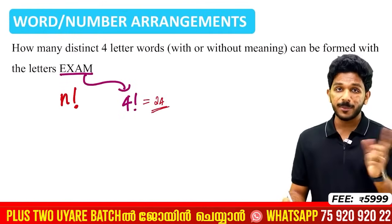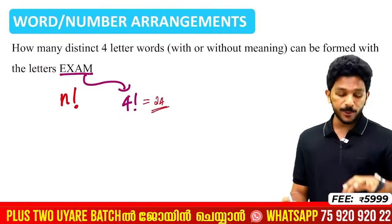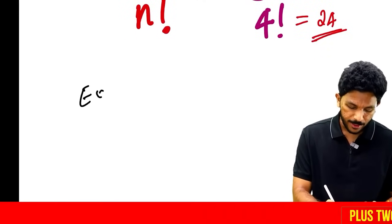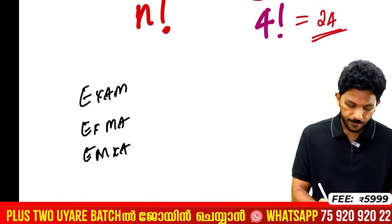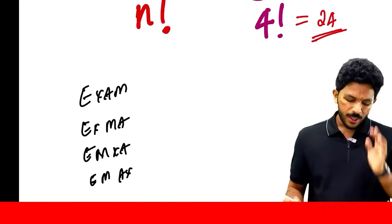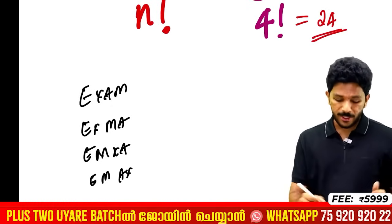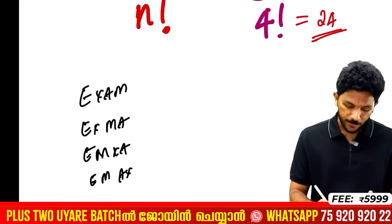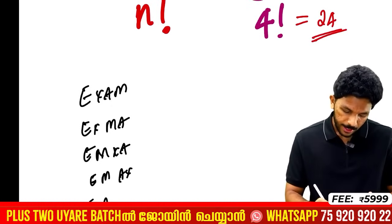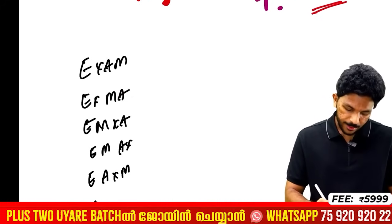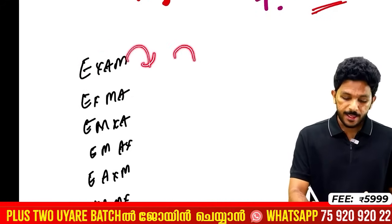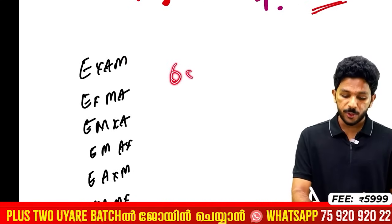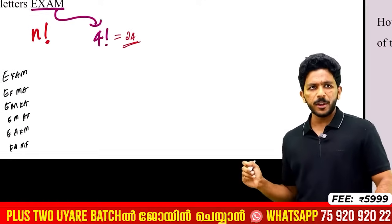The arrangements formula here is factorial. Four factorial equals 24. So starting with each letter of EXAM, we can form 4! = 24 distinct arrangements. If we start with E, we get 6 into 4 = 24. The answer is 24.